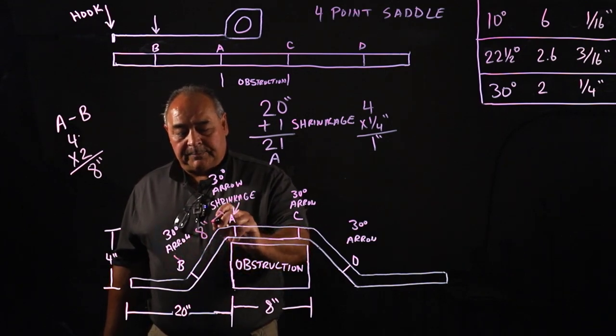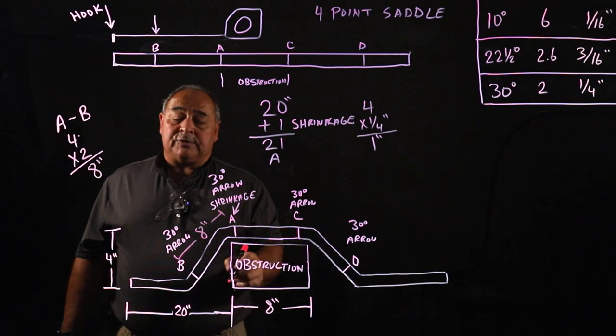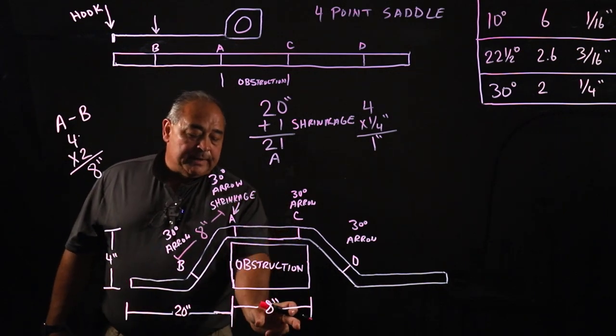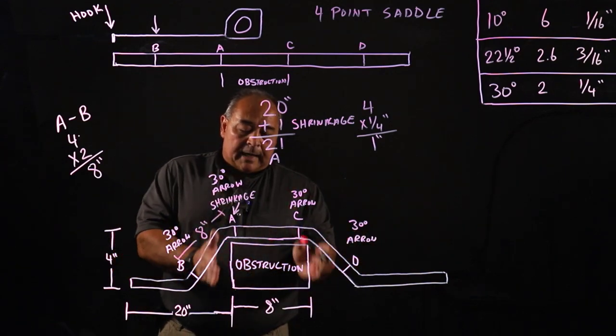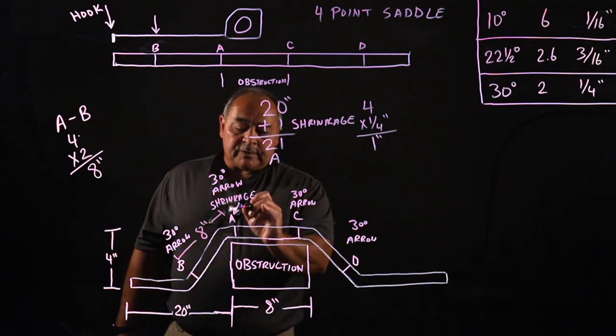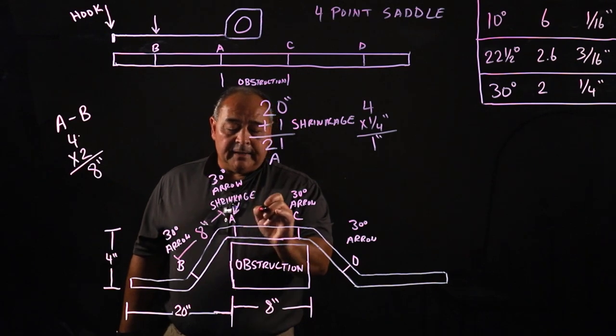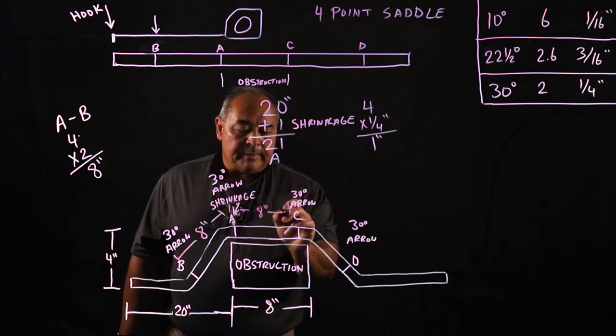That's simple, easy. We just need to know where A started. And then our physical dimensions from A mark to C mark is going to be however big that obstruction is. So we have a physical obstruction of 8 inches. So from here to here, it's going to be 8 inches.